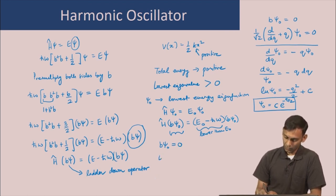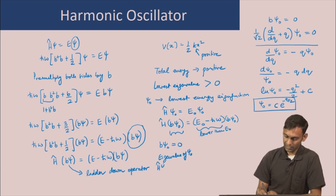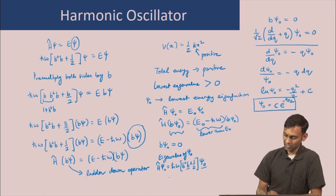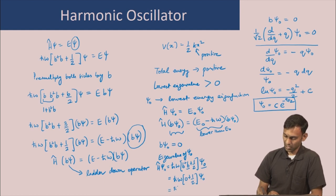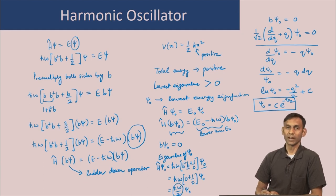Furthermore, the eigenvalue of psi-0, the lowest eigenfunction, is H of psi-0 equals h-bar omega (b-dagger b + 1/2) times psi-0. And we have seen that b operating on psi-0 is equal to 0, so that is h-bar omega (0 + 1/2) psi-0. So the eigenvalue is simply h-bar omega/2, and the energy of the ground state is E-0 = h-bar omega/2.